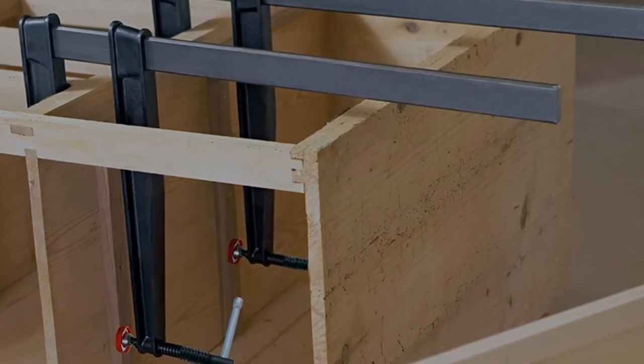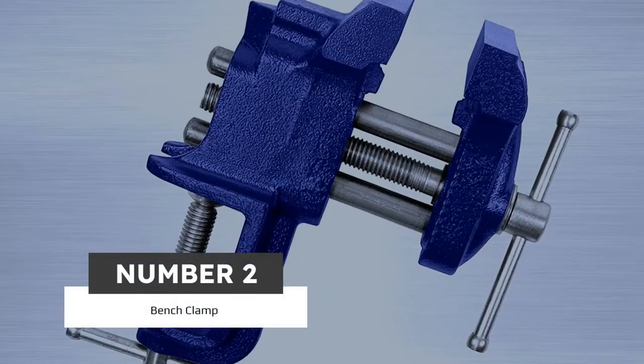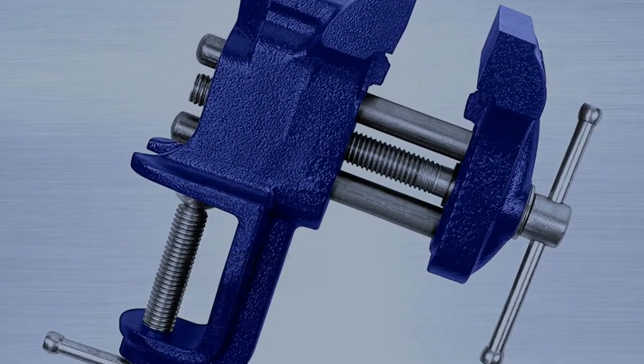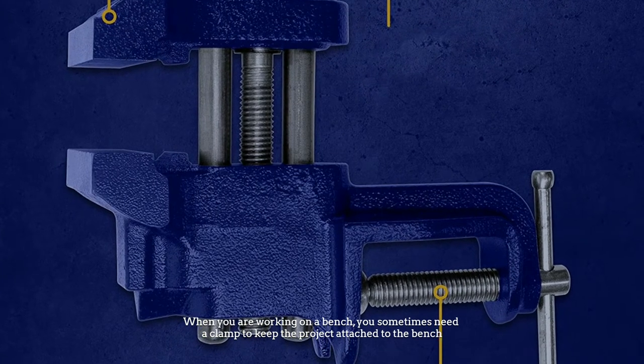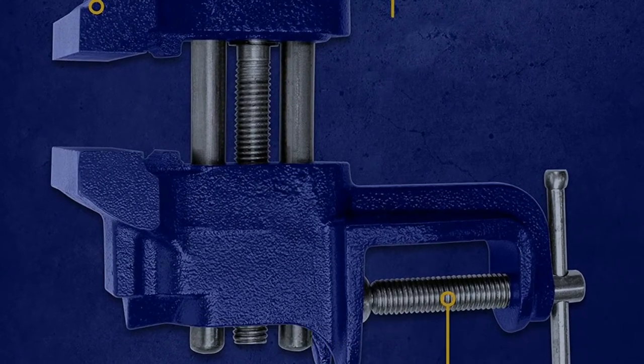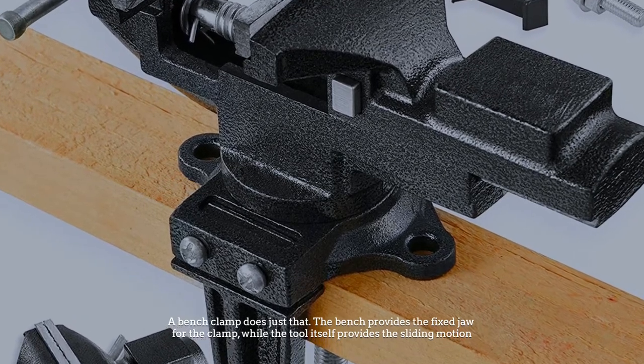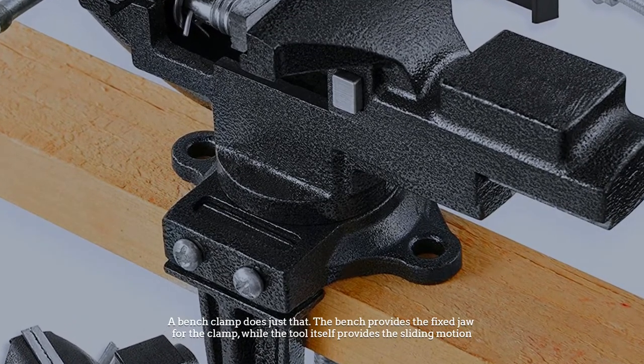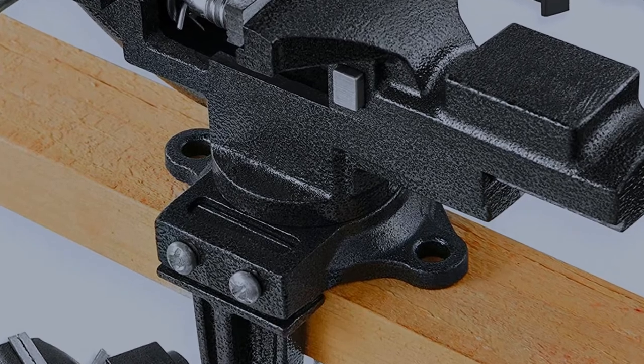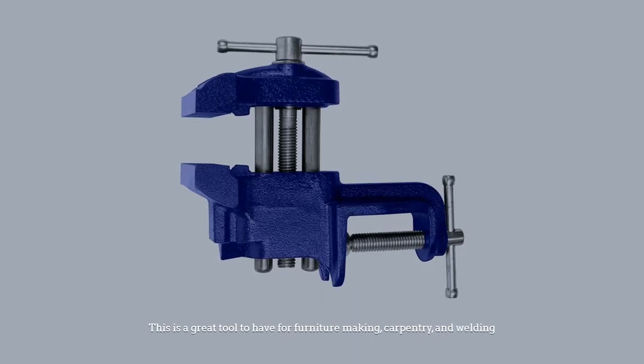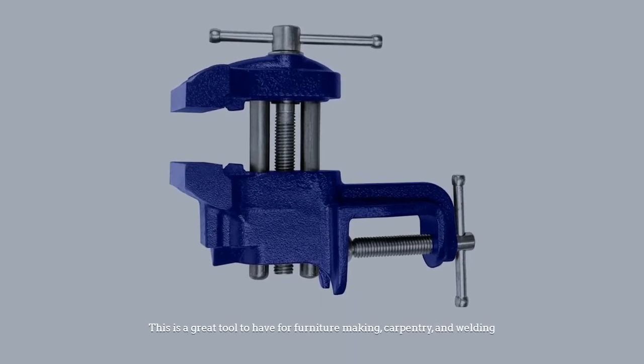Number two: Bench clamp. When you are working on a bench, you sometimes need a clamp to keep the project attached to the bench. A bench clamp does just that. The bench provides the fixed jaw for the clamp while the tool itself provides the sliding motion. This is a great tool to have for furniture making, carpentry, and welding.